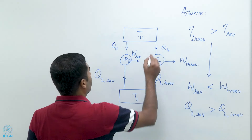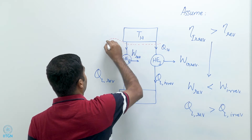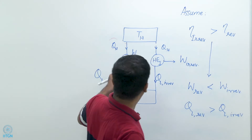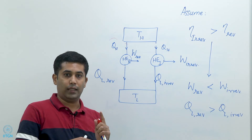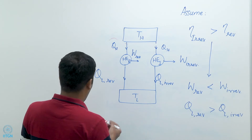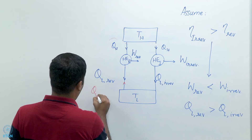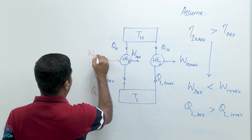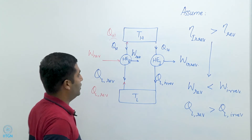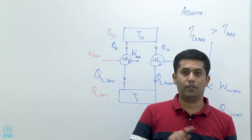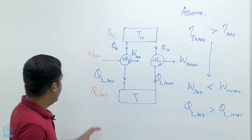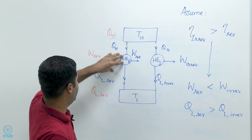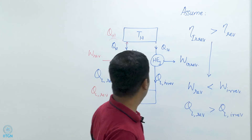We can merge these two engines. Because the reversible heat engine is reversible, we can operate it in reverse as a refrigerator. That means we take energy Q_L_reversible from the low temperature reservoir, input work W_reversible, and reject heat Q_H to the high temperature reservoir. So if we take out heat equal to Q_L_reversible from the low temperature reservoir and put in external work W_reversible, we output heat equal to Q_H.